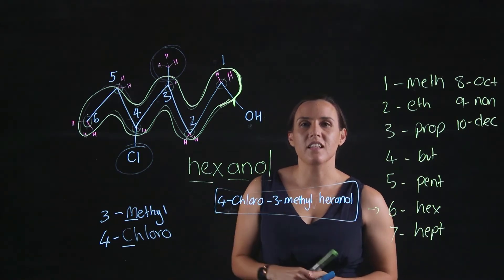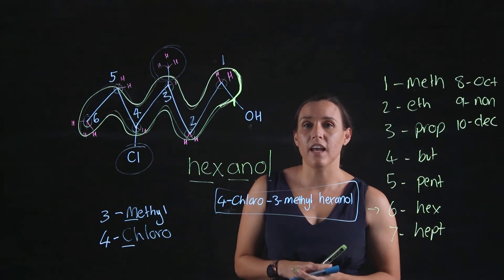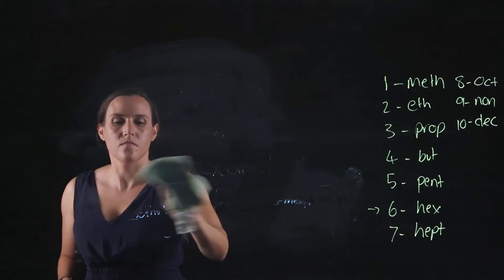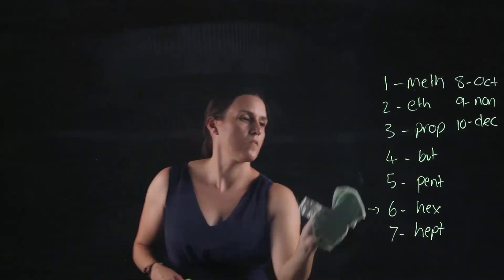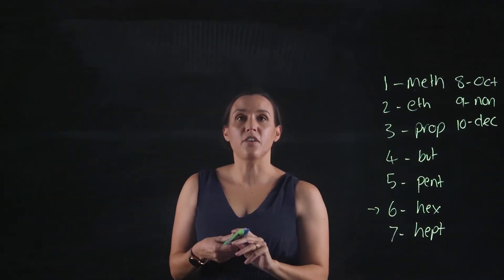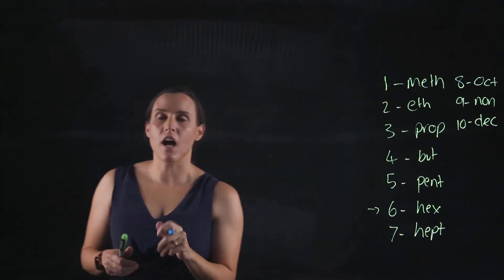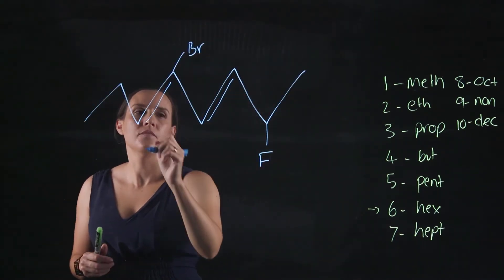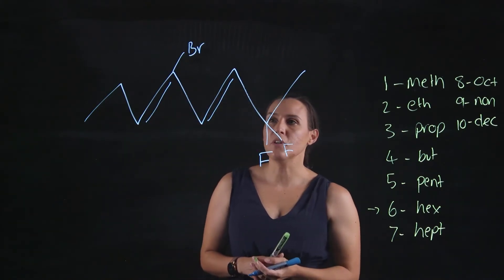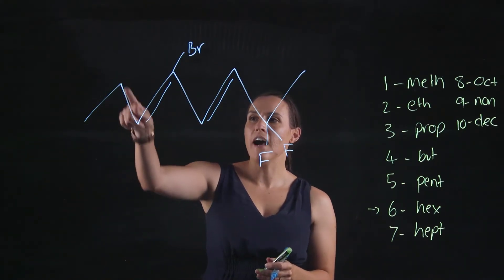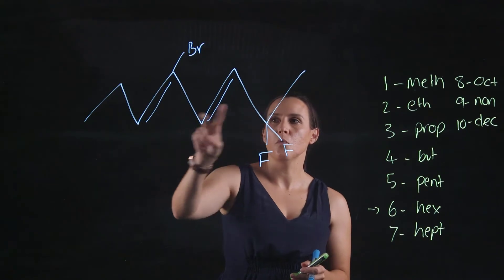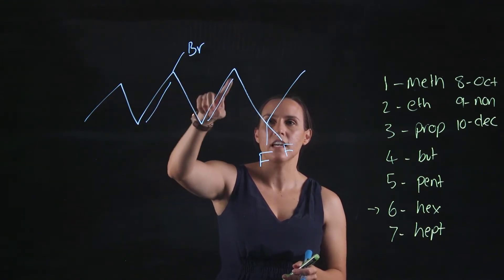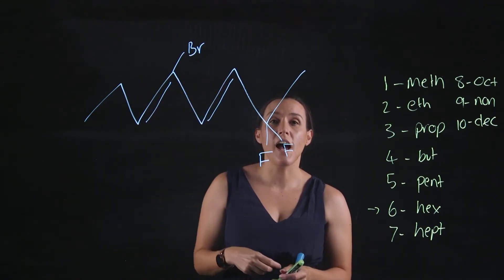Let's have a go at an alkene with the line diagram. In this example I've got an alkane backbone with two double bonds, so I've actually got two alkenes in here — it's a dialkene.